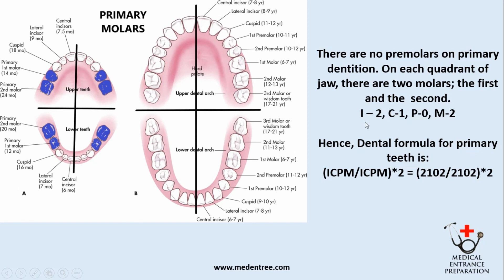So our dental formula for primary teeth will be: incisor 2, canine 1, premolar 0, and molar 2. Hence the dental formula for primary teeth is ICPM over ICPM into 2, written as 2102 over 2102 into 2. This is the dental formula for human primary teeth.